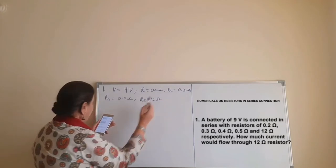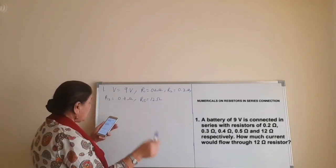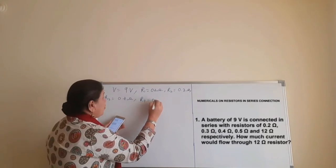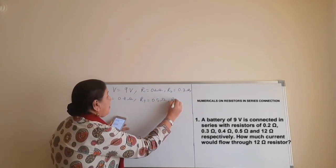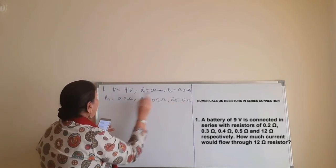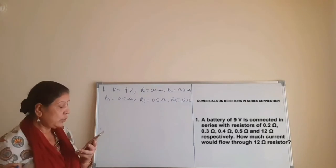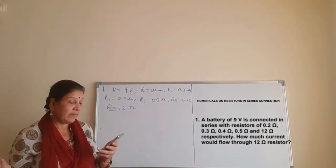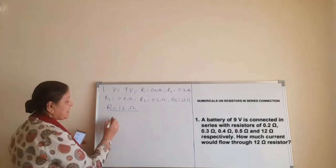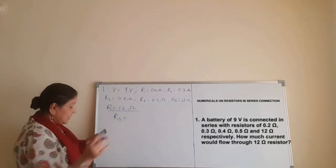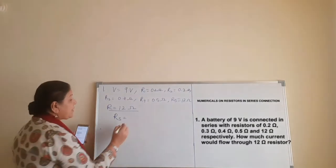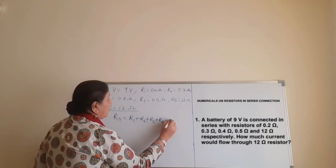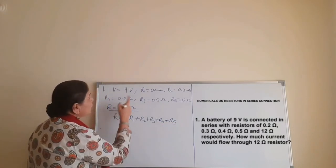So we have R1 = 0.2, R2 = 0.3, R3 = 0.4, R4 = 0.5, and R5 = 12 ohm. Since they are connected in series, we will find RS — the net resistance in series — which is the sum: RS = R1 + R2 + R3 + R4 + R5.